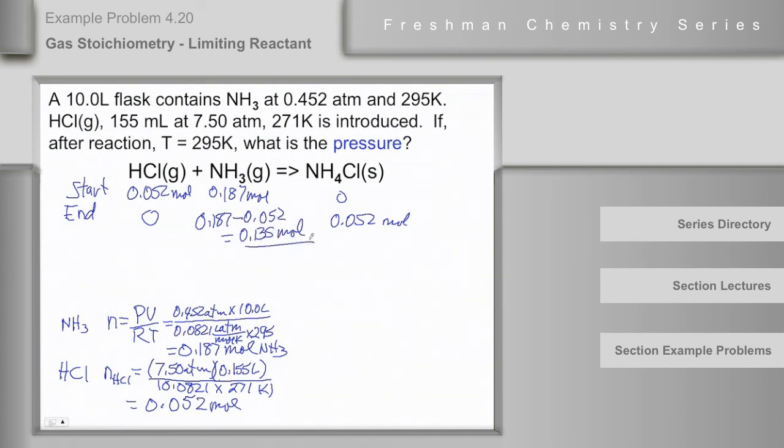And that's where the pressure comes from. The excess ammonia is the only thing left to give pressure because the HCl has all been consumed, made ammonium chloride.